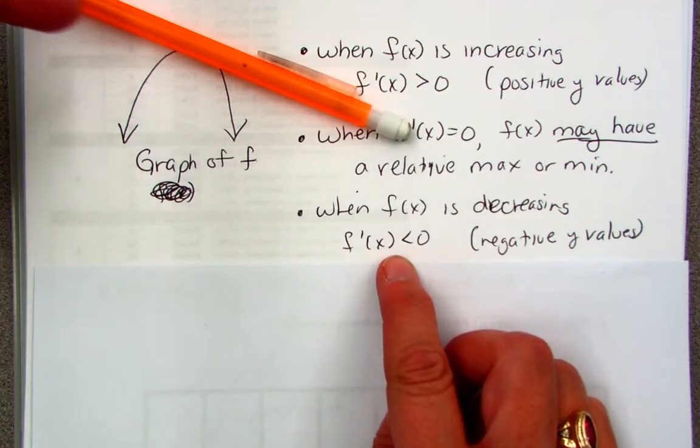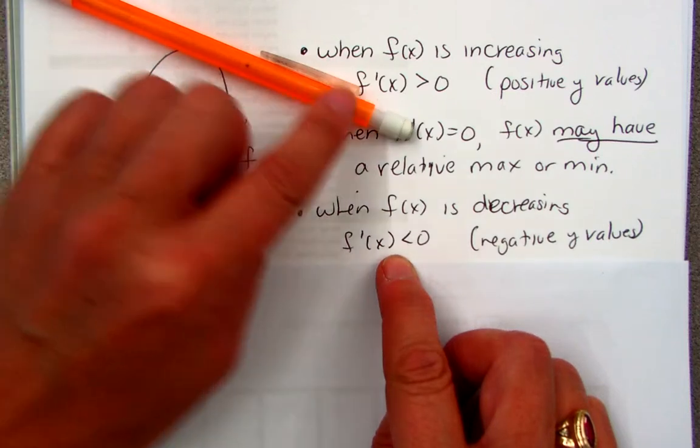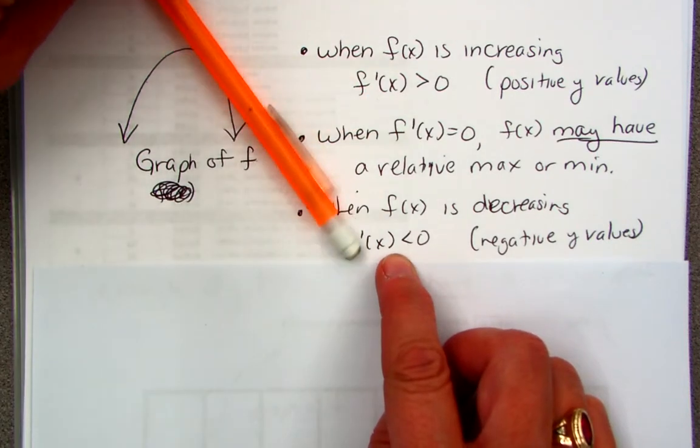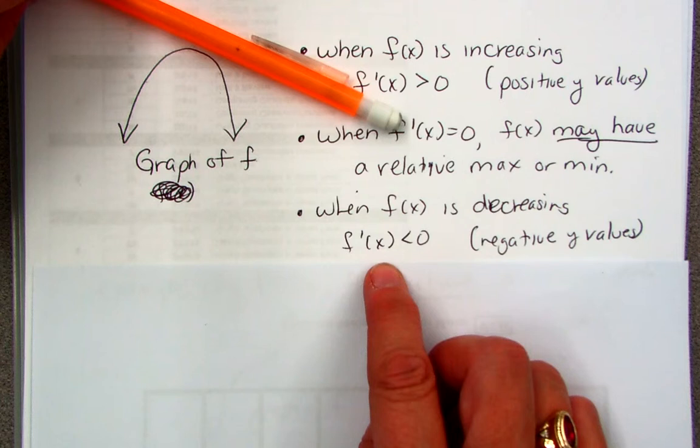Right? This is a negative slope. Think of your linear equations. And that's what it means to be less than zero. They're negative.